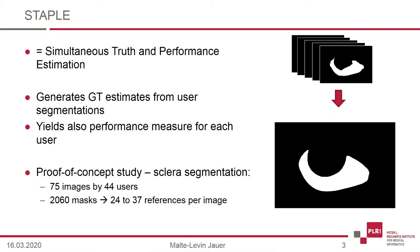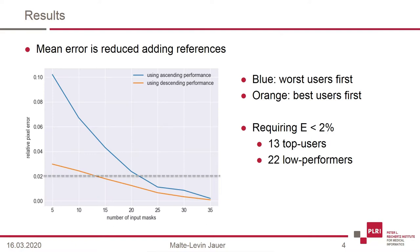In a test study with 75 photos of human eyes, we collected 2060 segmentations — at least 24 segmentations per image — and compared how many references were needed for a reliable ground truth. As assumed, the error decreases with the number of users. However, there are differences depending on the user performance.